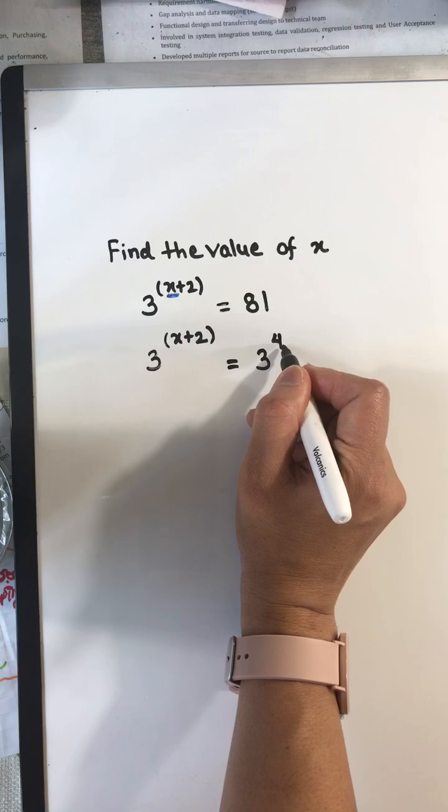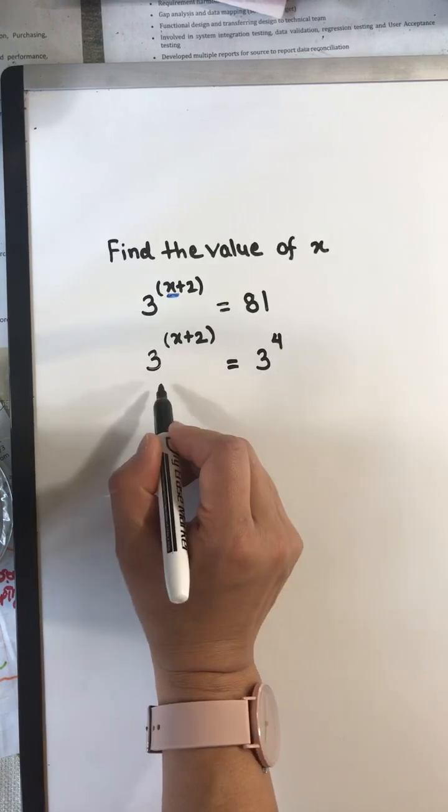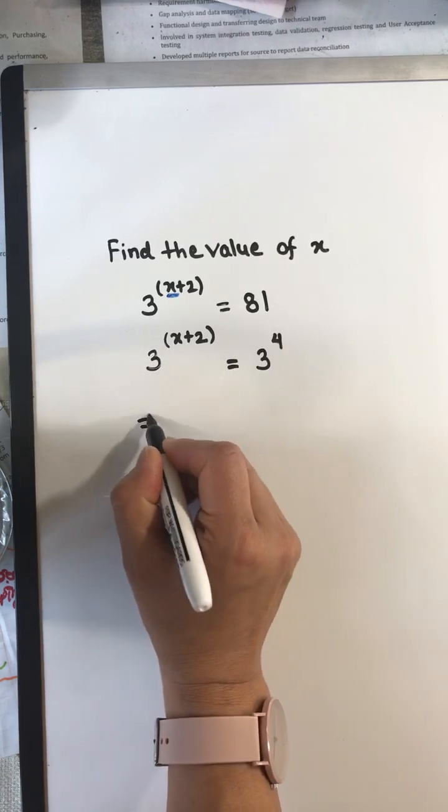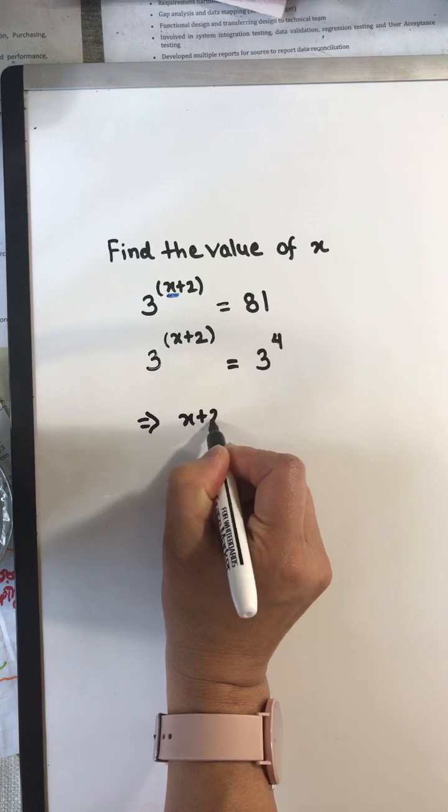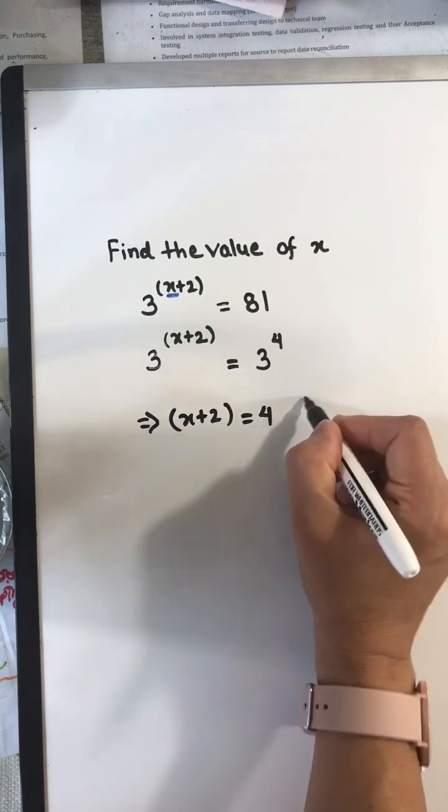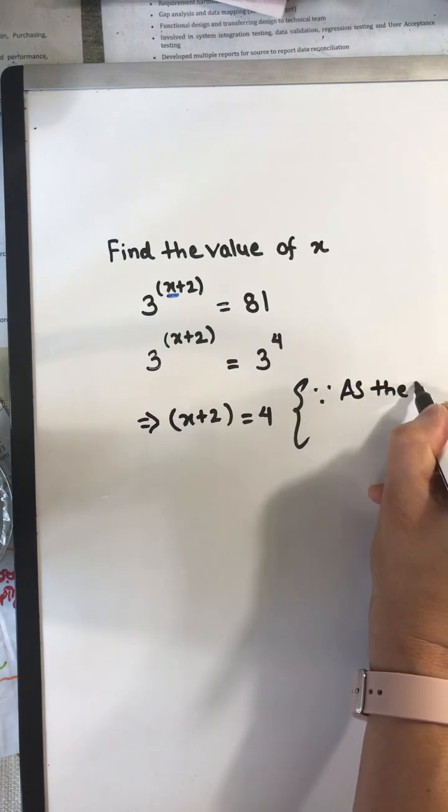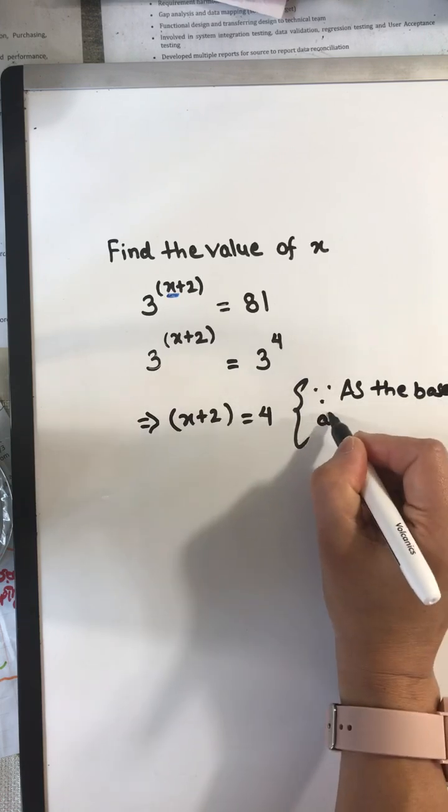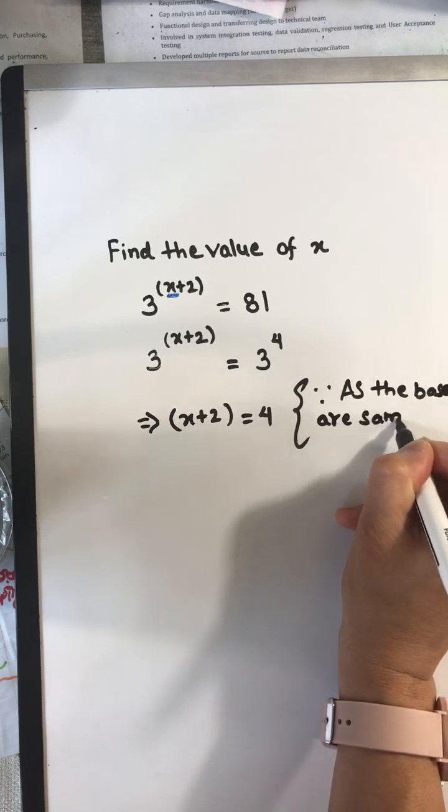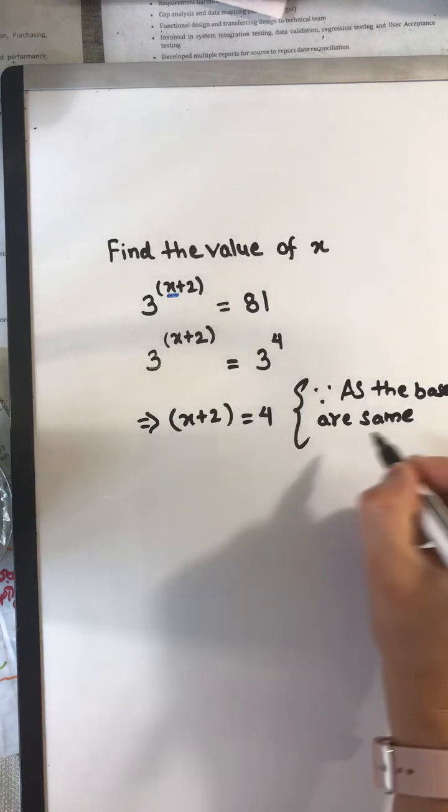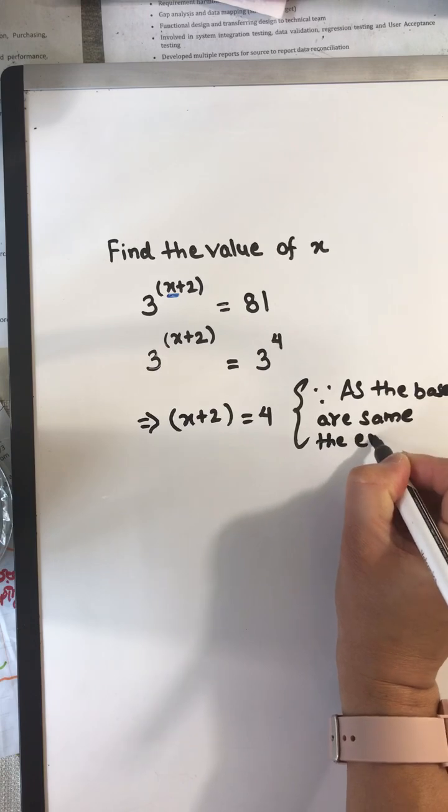Now as the bases are same, we can equate the exponents. This is the property of exponents. So we are going to equate the exponents and write: as the bases are same, the exponents are also same.